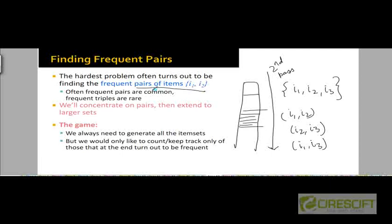In the second pass, we will look at which pairs of items are frequent. When making the second pass, we will generate all pairs of items for each basket, but only keep track of those that turn out to be frequent at the end. At the end of the second pass, we would know which pairs of items are most frequent. We will store information about frequent pairs as we move into the third pass for generating frequent triples.